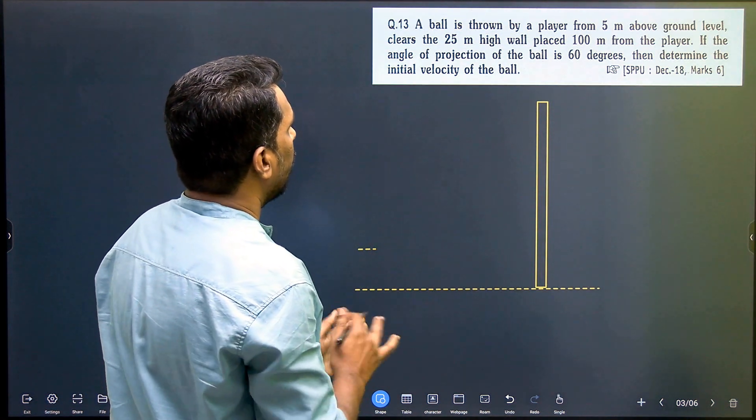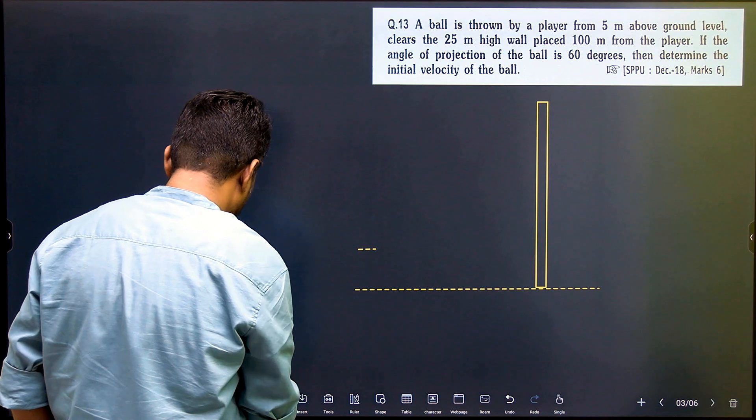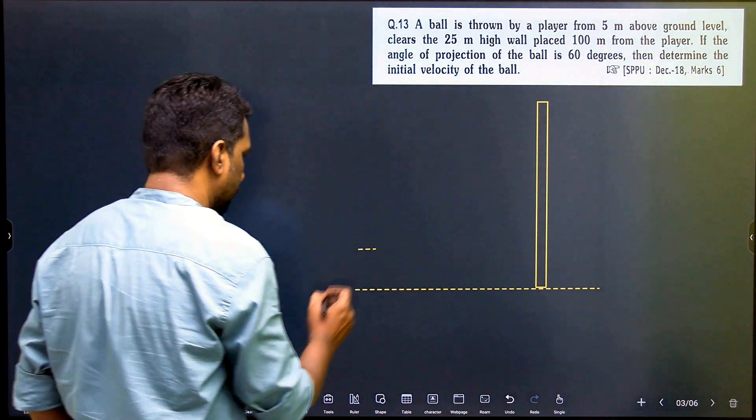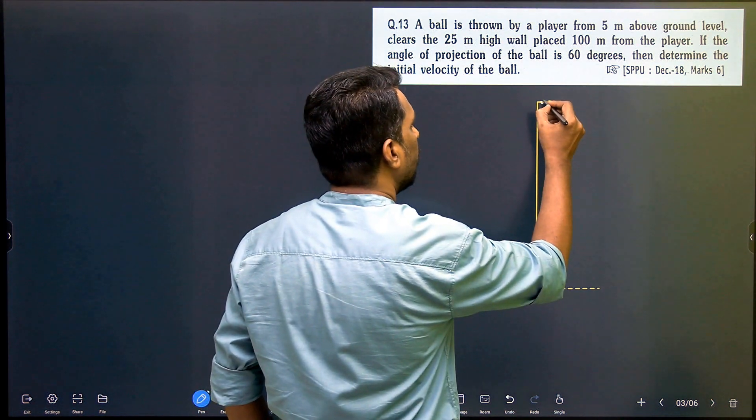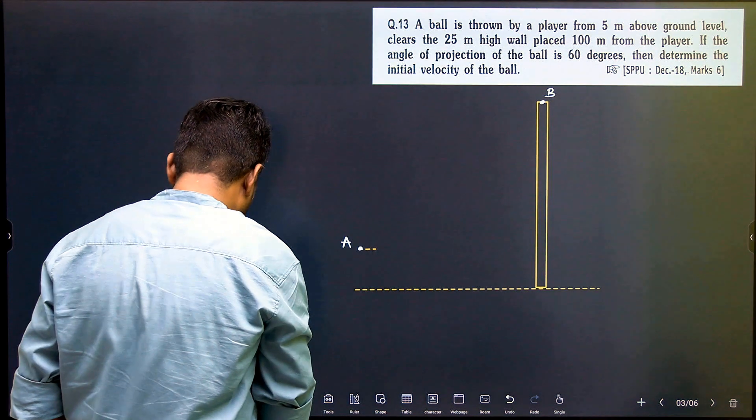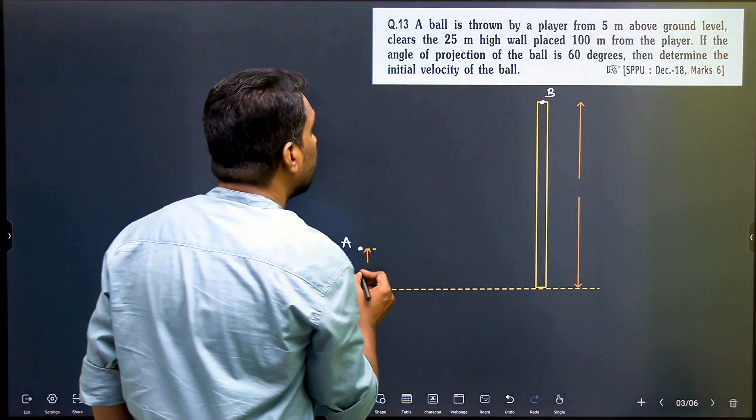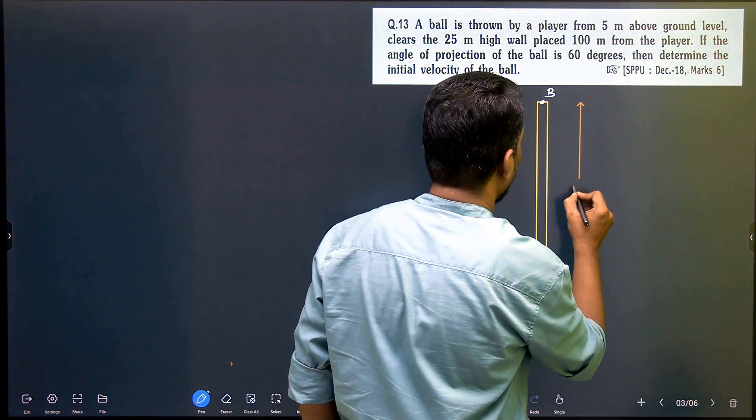It is placed at 100 meters. You have to show the dimensions. This is my A point which is 5 meters up. And I have to show the B point, which is 25 meters up from the ground level. This is 5 meters above the ground and this is 25 meters high wall.